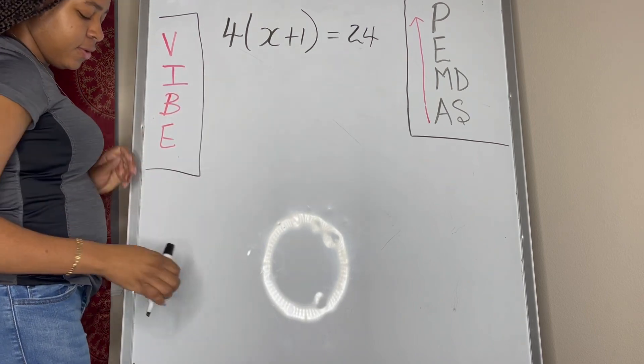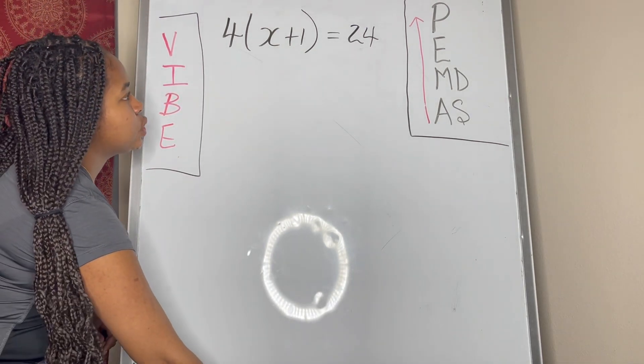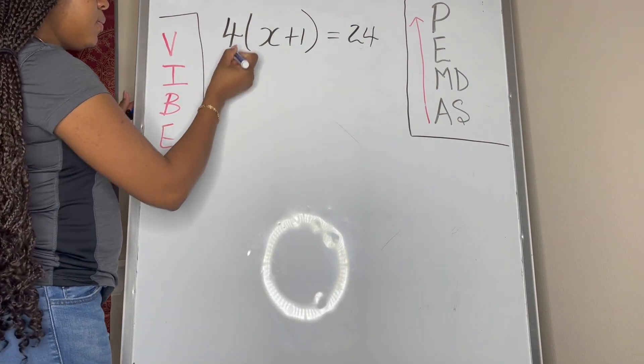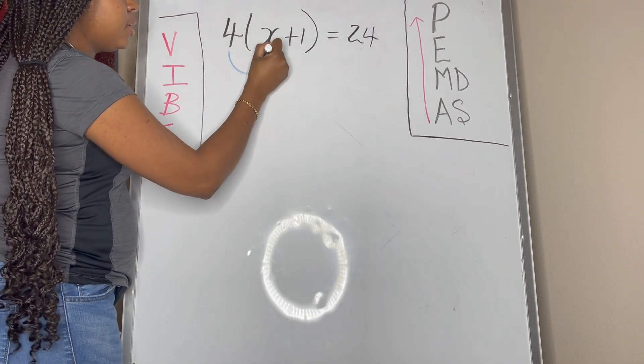So if we're going to do the parentheses first, then that means we're going to need to use the distributive property. So here we go, get rid of our parentheses.